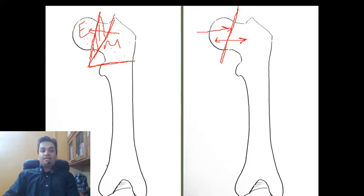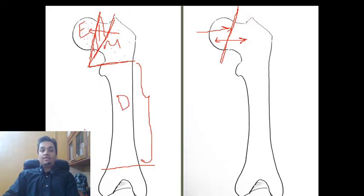From the metaphysis to the distal metaphysis, the shaft of the bone is called the diaphysis. The diaphysis is the strongest and longest part of the bone, and it also receives the main nutrition of the bone — the nutrient artery — which enters the bone through the nutrient foramen.